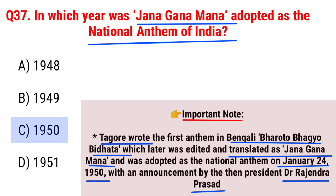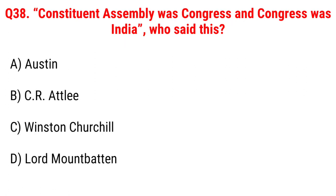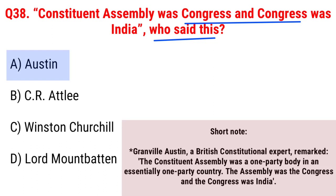Friends, this question is very important. Next question: 'the constituent assembly was Congress and Congress was India' — who said this? Option A, Austin; B, C.R. Attlee; C, Winston Churchill; D, Lord Mountbatten. The right answer is Option A, Austin. Short note: Granville Austin, a British constitutional expert, remarked the constituent assembly was a one-party body in an essentially one-party country. The assembly was the Congress and Congress was India.